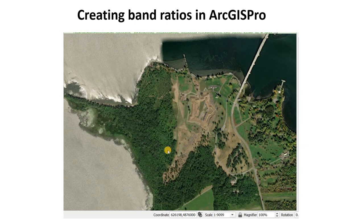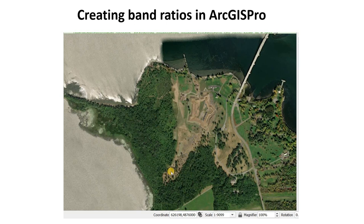So our goal is to classify — create a classified map of the Crown Point Historic Site. We have a variety of different user classes, including water, mature forest, grass, and rock, and a couple others. We want to classify the pixels into these user classes.